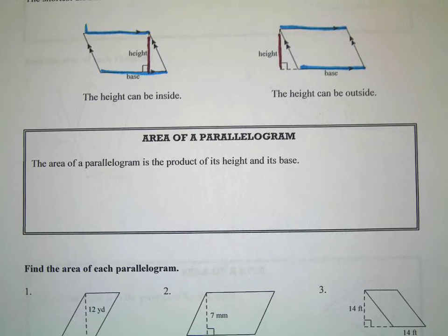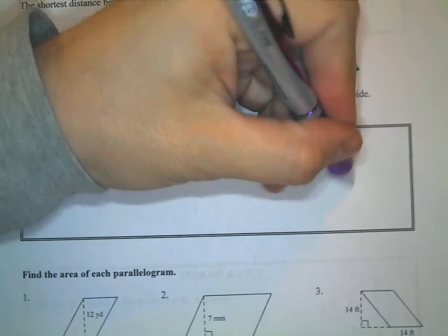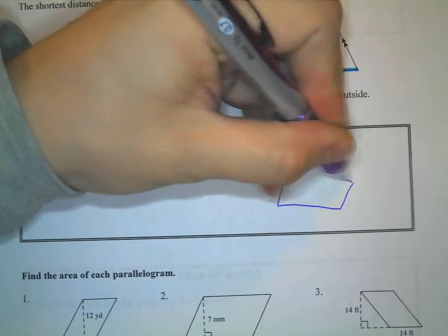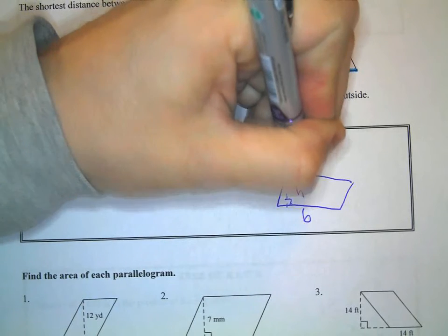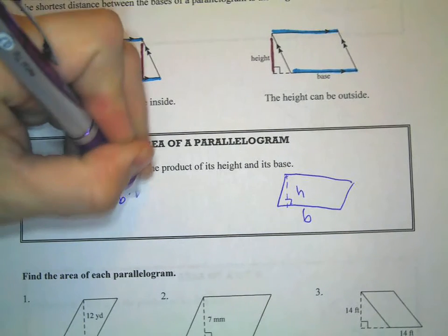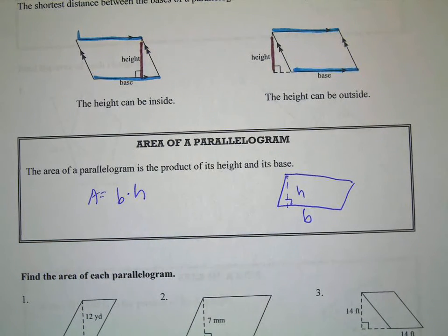Okay, so the area of a parallelogram is the product of its height and its base. So if I have a parallelogram here, and this is the base, the height will be inside somewhere. So it's just area equals base times height, which is the same formula we use for rectangle, which makes sense because the rectangle actually is a parallelogram.